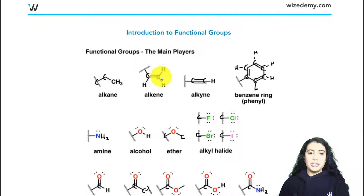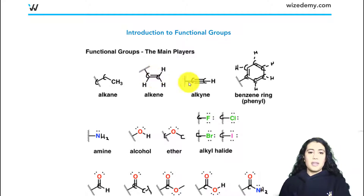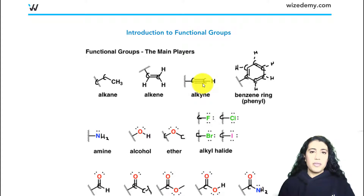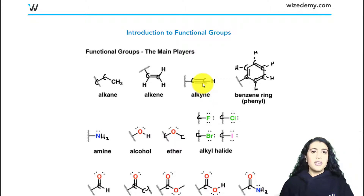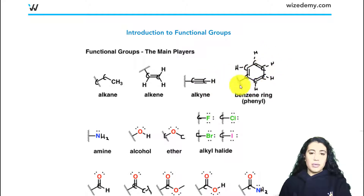An alkene is still referring to carbon and hydrogen but here we have a double bond between two carbon atoms. Then we have an alkyne as well, which is another type of hydrocarbon — just carbons and hydrogens — and here you're going to see at least one triple bond between two carbon atoms.